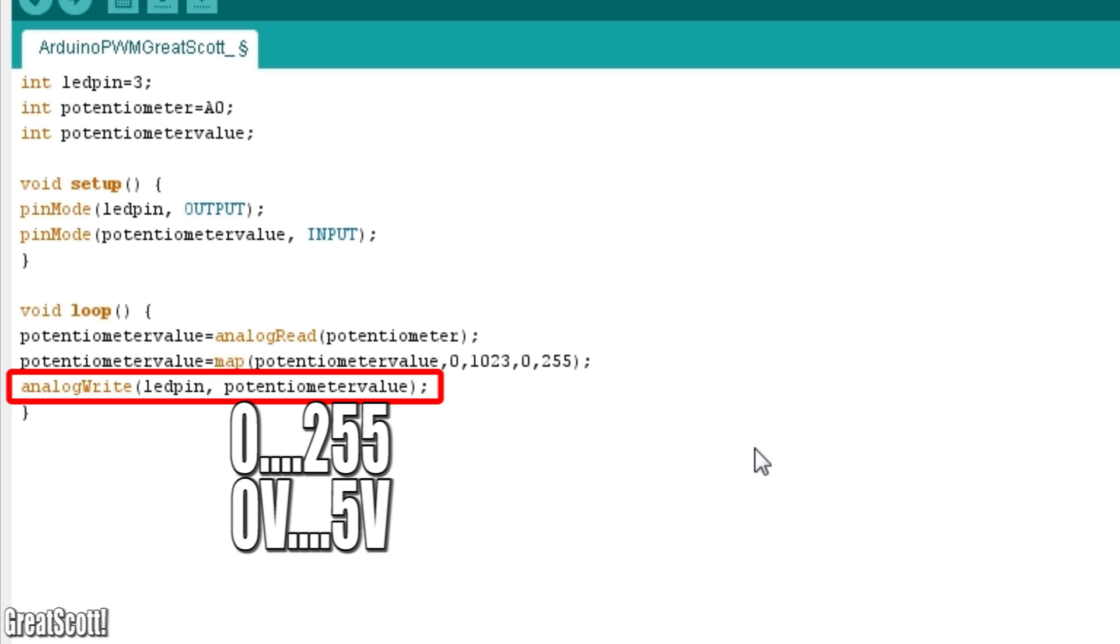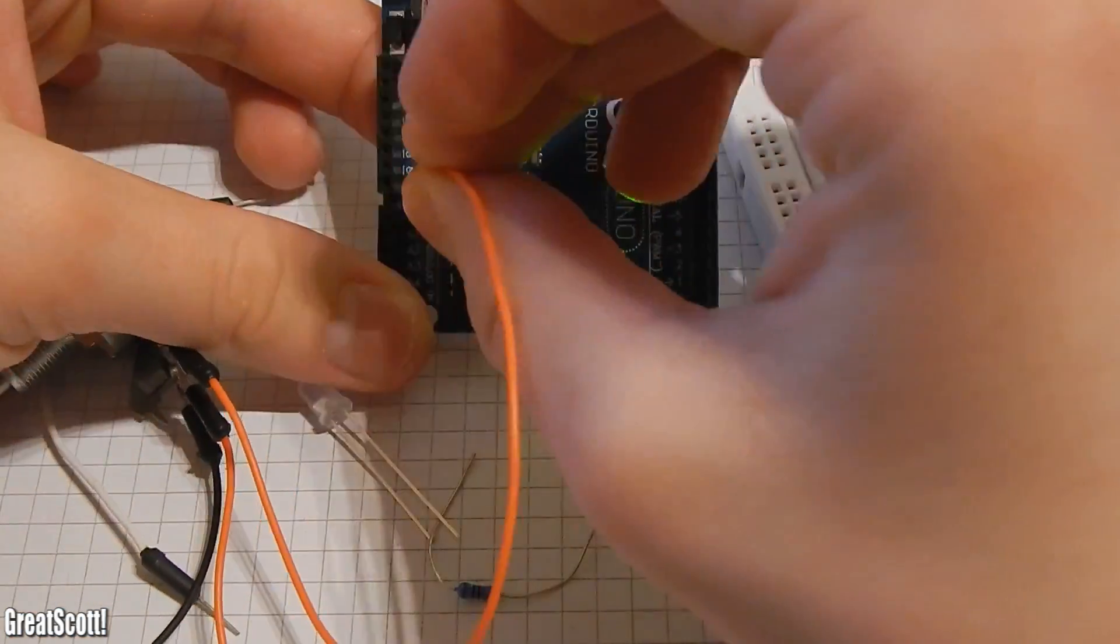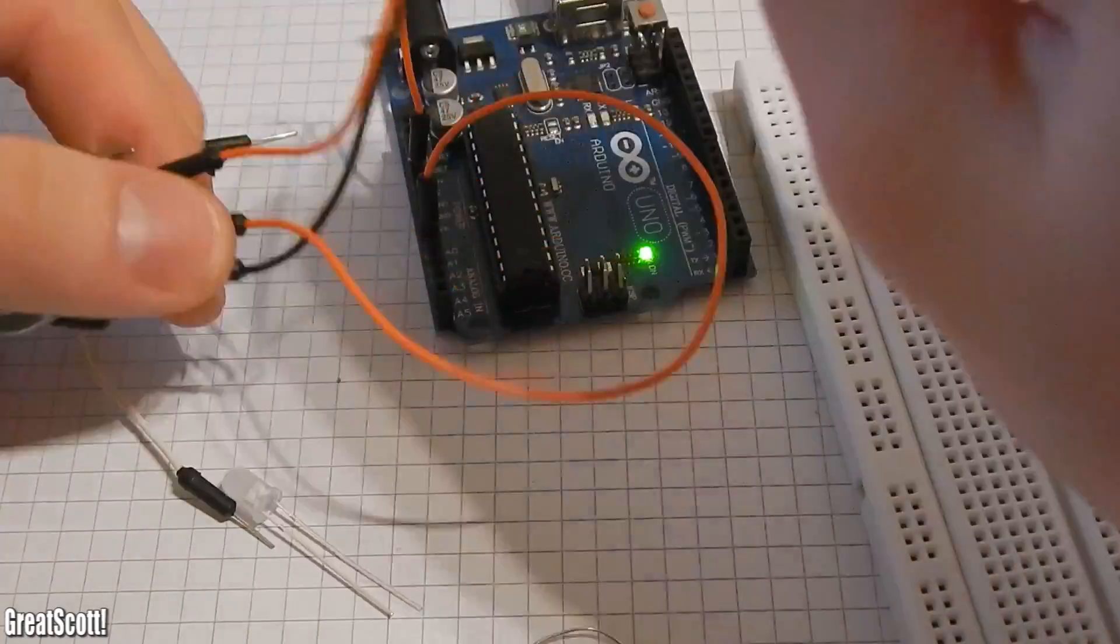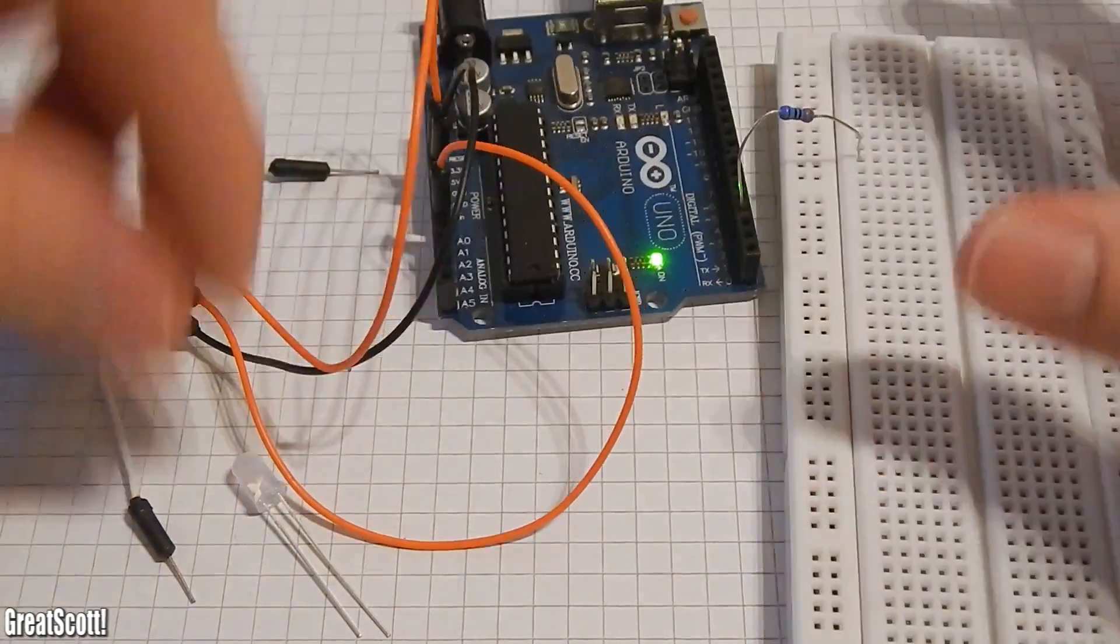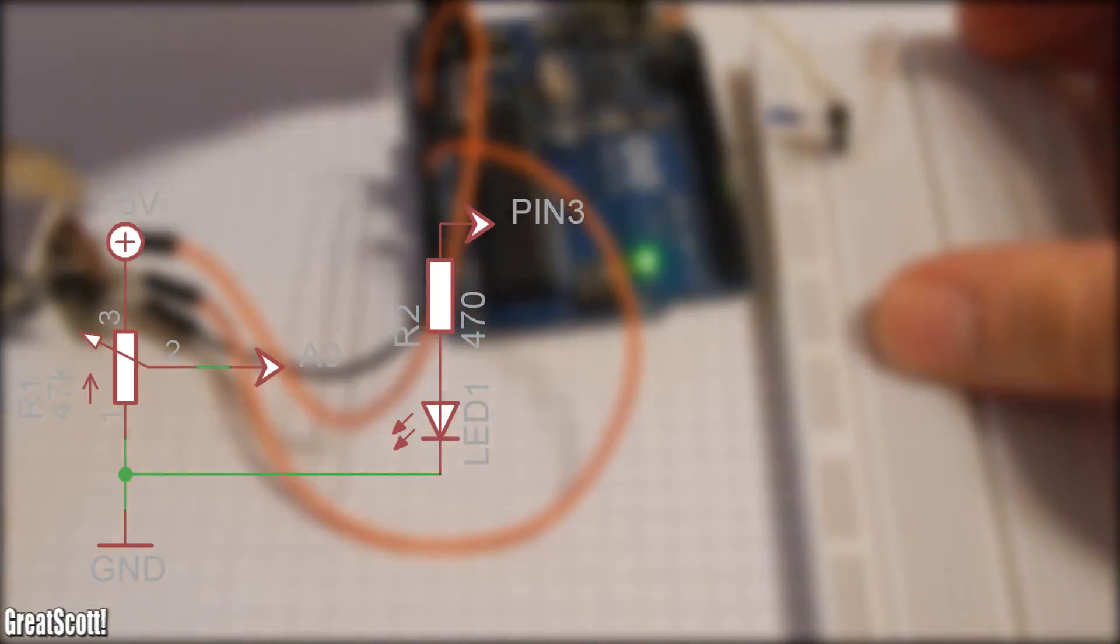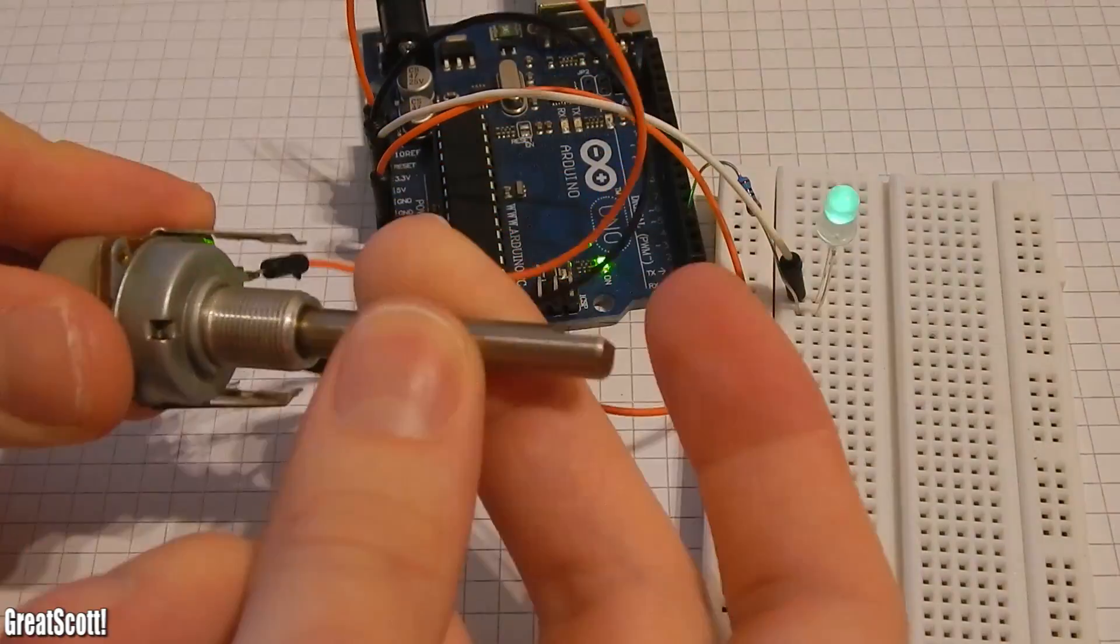Here I'm using a potentiometer as an analog input to control the value of the analog write function and therefore to dim the LED on PWM pin 3. And of course you can download the sketch and all schematics. Link is in description. But sometimes you just don't want to waste the microcontroller. No problem.